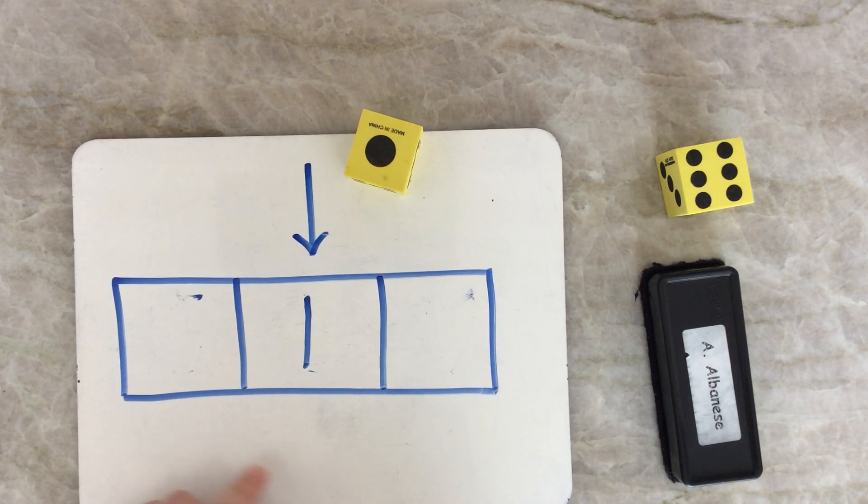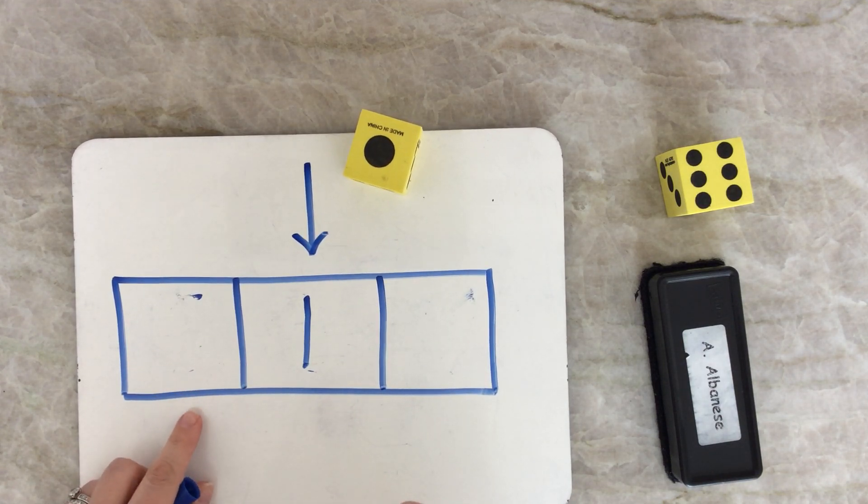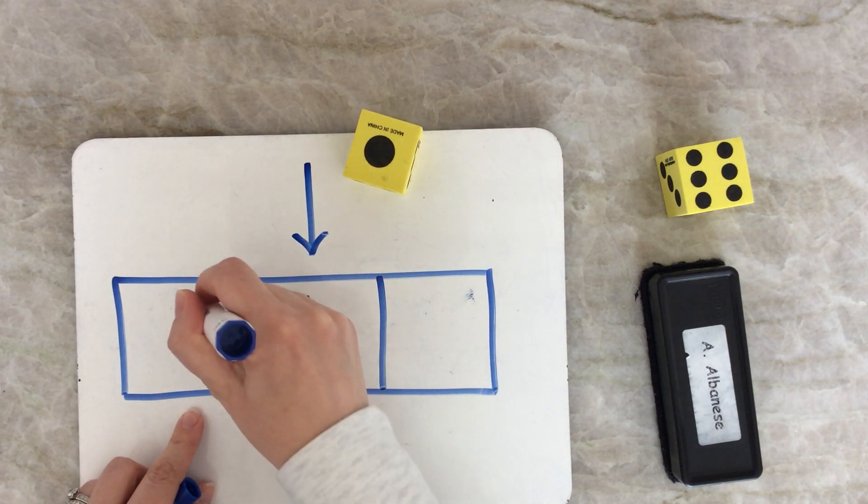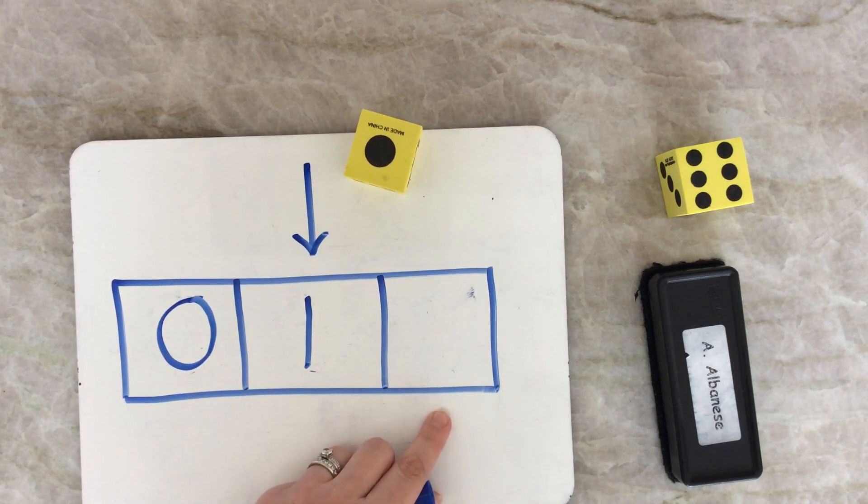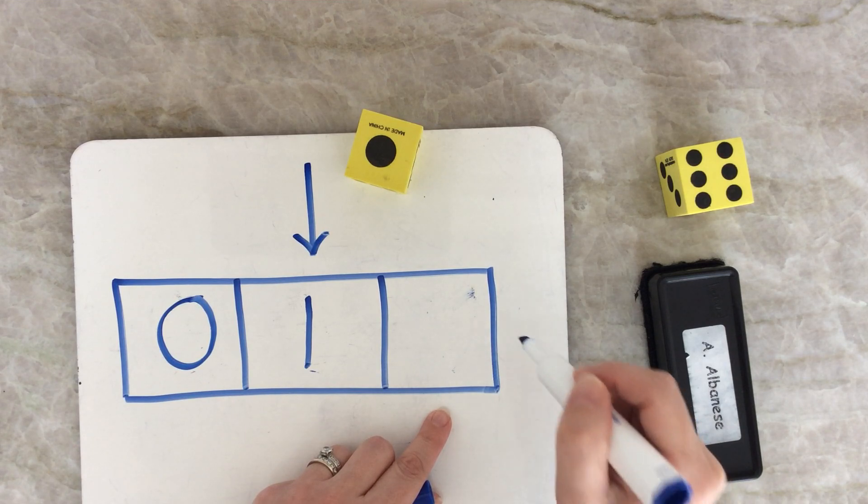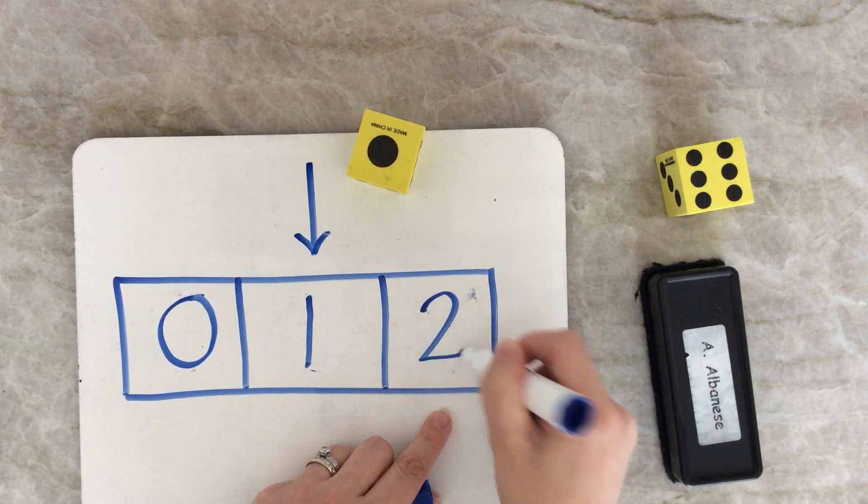Hmm, this is a tricky one. What number comes before one? If you said zero, you're right. What number comes after one? Number two.